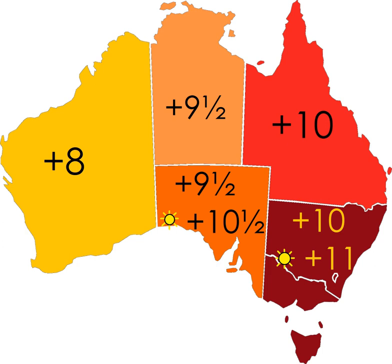Though the governments of the states and territories have the power to legislate variations in time, the standard time within each is set related to Coordinated Universal Time as determined by the International Bureau of Weights and Measures, and set by Section 8AA of the National Measurement Act of 1960. Australia has kept a version of the UTC atomic time scale since the 1990s, but Greenwich Mean Time remained the formal basis for standard times of all states until 2005.